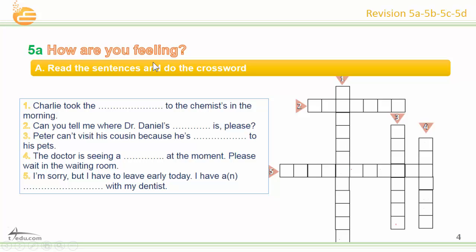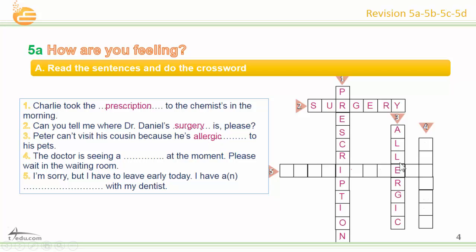5A: How are you feeling? Read the sentences and do the crossword. Number one: prescription. Number two: surgery. Number three: allergic. Number four: patient. Number five: appointment.